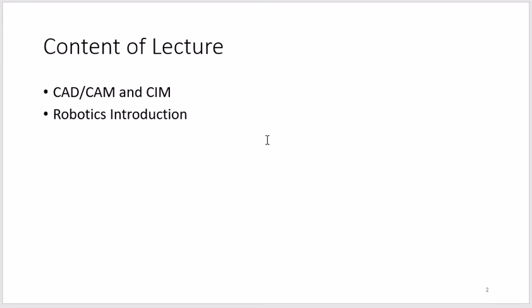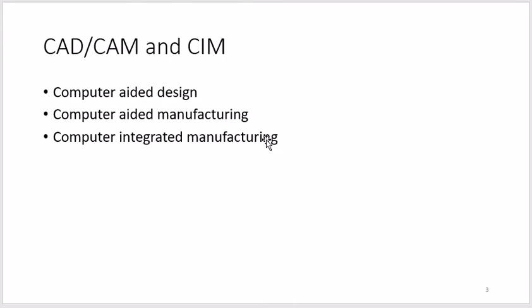We will also discuss robotics — I'll introduce that topic and cover its applications in different areas of industry, with the remaining part in the next lecture. Starting with CAD, CAM, and CIM: CAD stands for Computer-Aided Design or Drafting, CAM stands for Computer-Aided Manufacturing, and the third one is Computer Integrated Manufacturing.